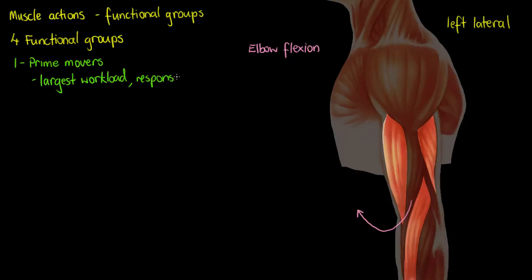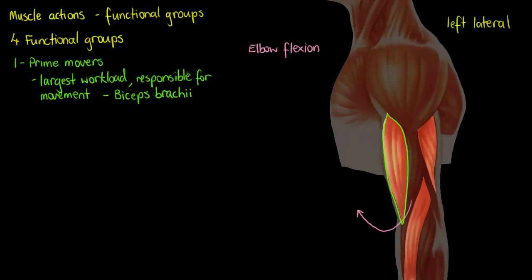Looking at the muscles highlighted here — the bicep, the tricep, or the brachioradialis — it's definitely going to be our bicep. Our bicep extends the length of the humerus and inserts down onto our radius. When lifting the elbow upward and decreasing that angle in flexion, we need that insertion on the radius for the bicep to pull against. Prime movers are often called agonists — they're the muscle with the largest workload, so they're the muscle that's going to be in agony when you work it.